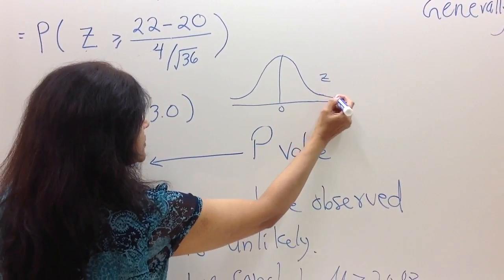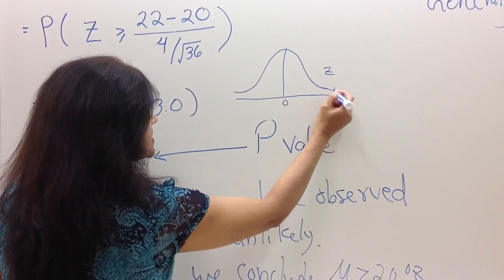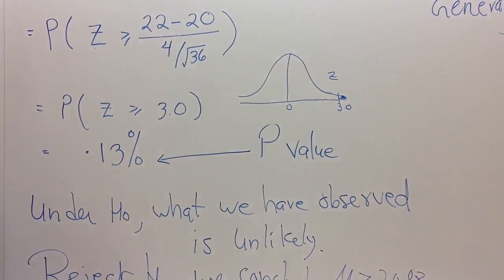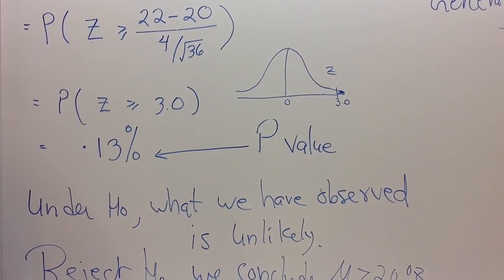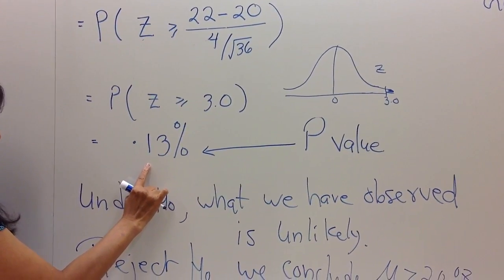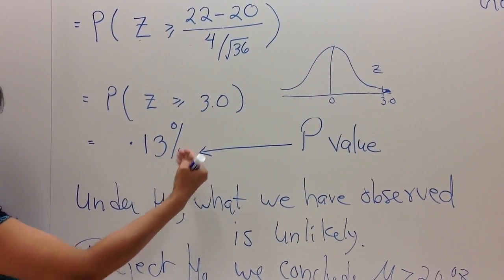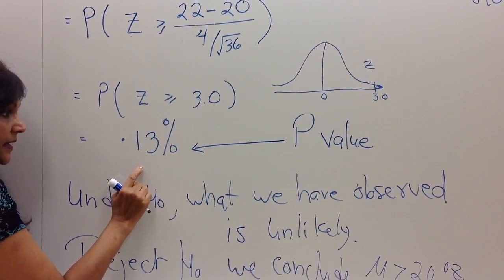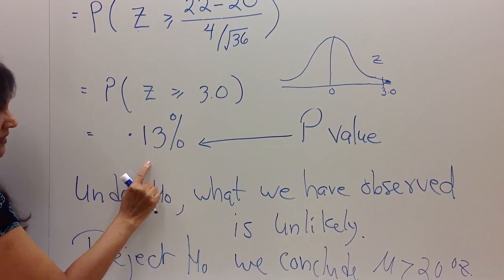So the question is, well, what's the probability that z could be as high as or higher than 3? From the normal table, that probability turns out to be 0.13% or 0.0013. This probability is called the p-value.